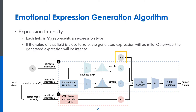To support adjusting the intensity of expressions, we modified the algorithm by tuning the conditional vector VC2. Therefore, Emoji can generate sketches of expressions with two different intensities — mild and intense — without requiring training samples of both intensities.